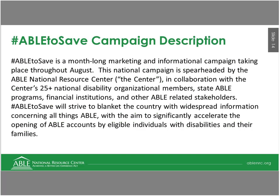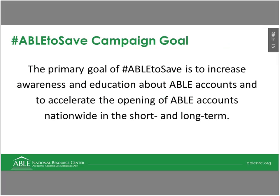The Hashtag ABLE2Save campaign is a month-long marketing and informational campaign taking place throughout August. The national campaign is spearheaded by the ABLE National Resource Center in collaboration with over 25 national disability organizational members, state ABLE programs, financial institutions, and other ABLE-related stakeholders. The campaign strives to blanket the country with widespread information concerning all things related to ABLE, with an aim to significantly accelerate the opening of ABLE accounts by eligible individuals with disabilities and their families.